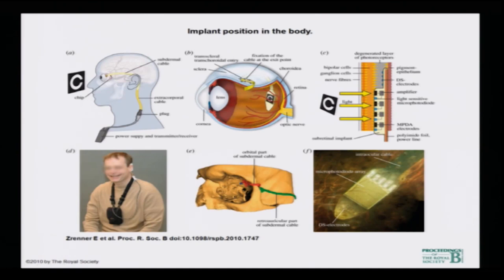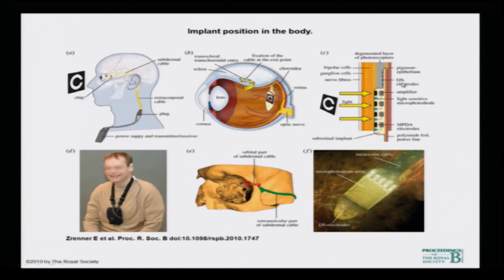Coming to the implant position in the body — this is where you can put the implant, either in the front of the eye or within the eye. This is the cornea, this is the lens, and you can put an implant here in the front of the eye (a camera), or you could have a subretinal implant here at position C. This is how it will work — the actual implant sitting here where the light falls on light-sensitive micro-photodiodes, which have amplifiers, and from here the signal is sent all the way to the brain.